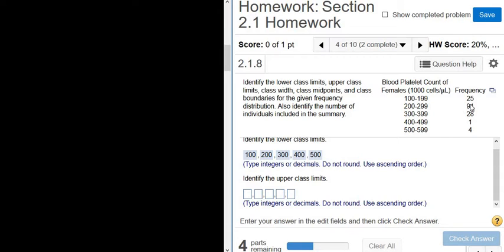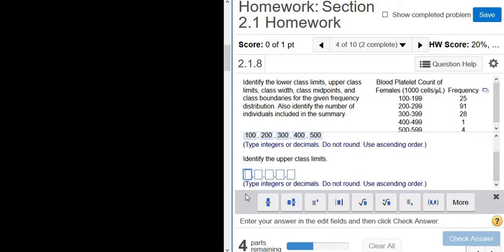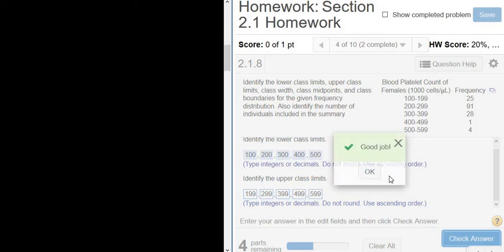So there are 25 females with the blood platelet count between those numbers. So this is 199, 299, 399, 499, and 599. Let's try it. Good stuff.